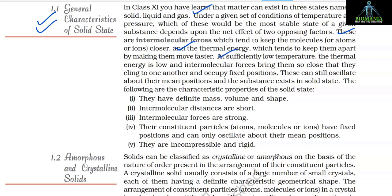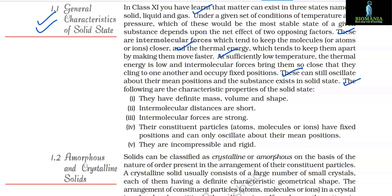At sufficiently low temperature, thermal energy is low and intermolecular forces bring particles so close that they cling to one another and occupy fixed positions. They can still oscillate about their mean positions, and the substance exists in the solid state. The characteristic properties of the solid state are: they have definite mass, volume, and shape.